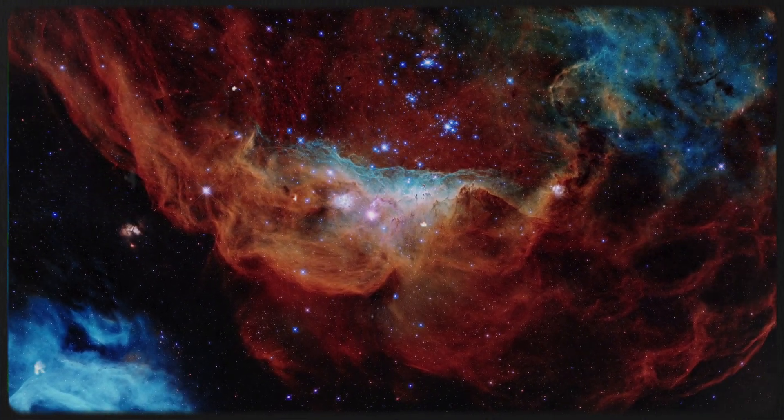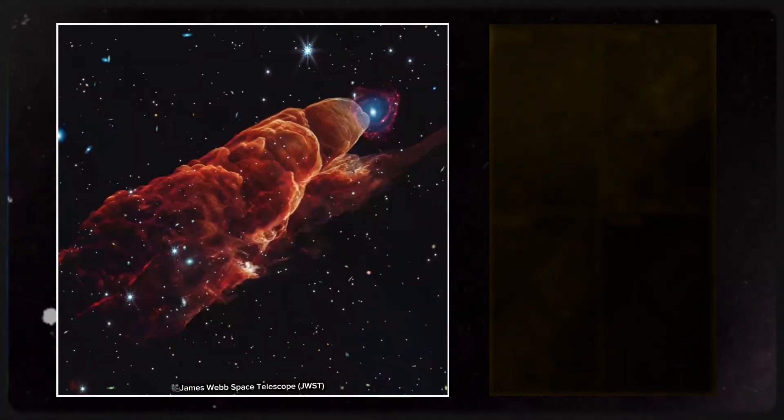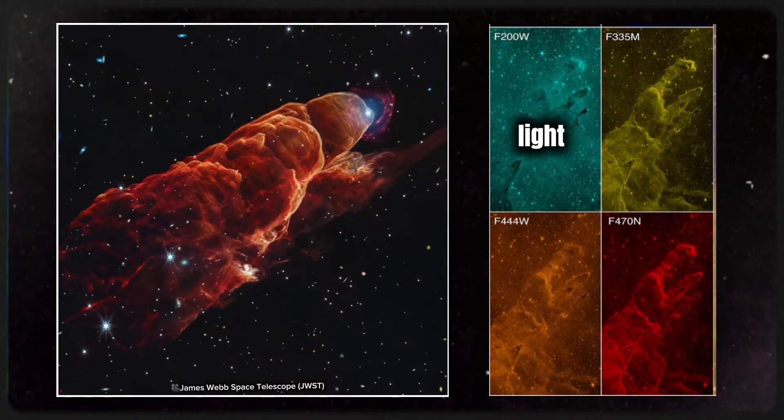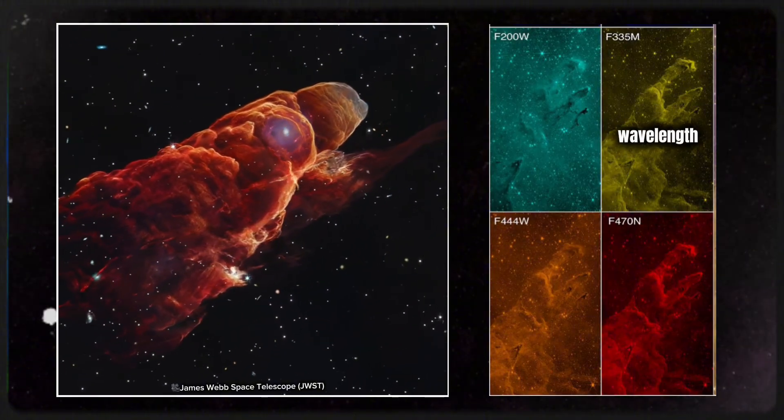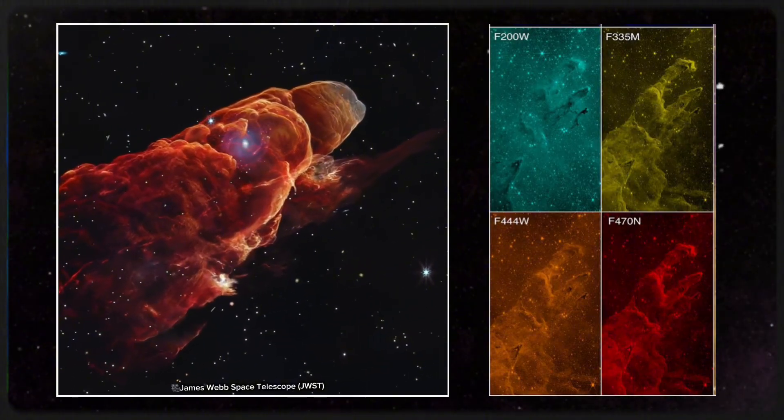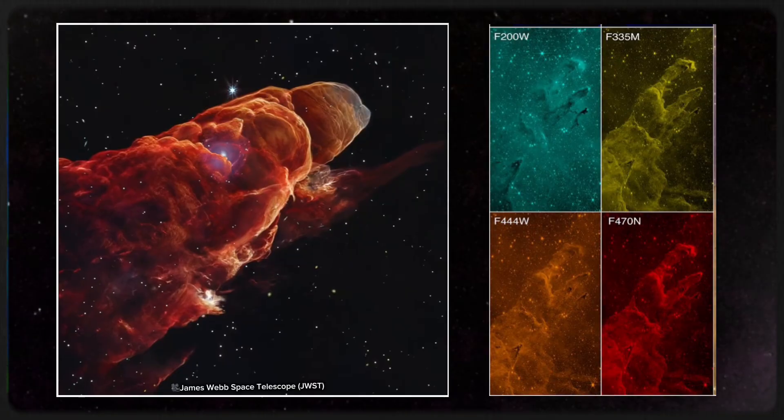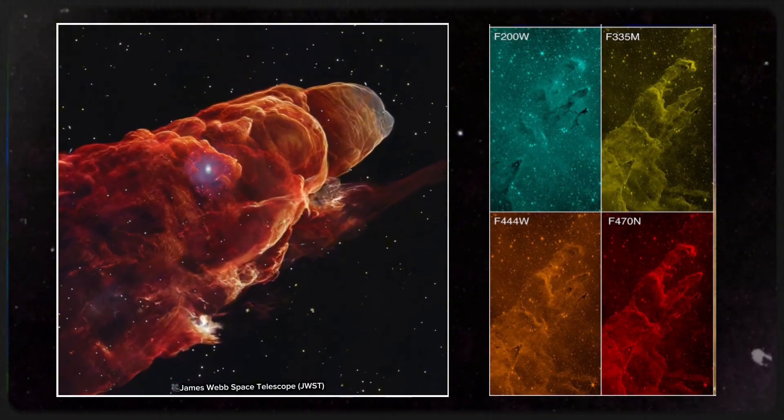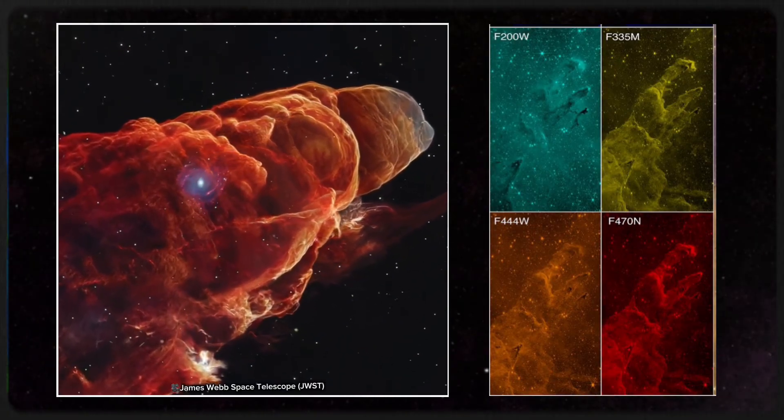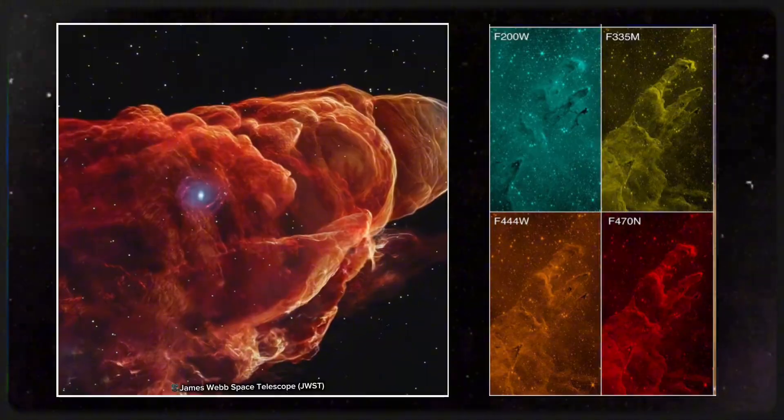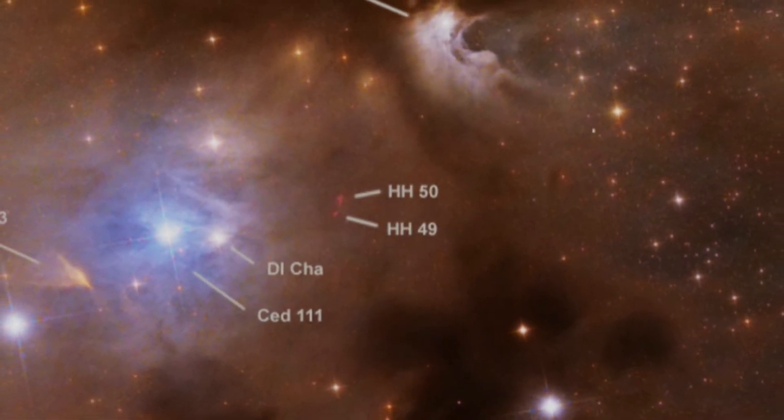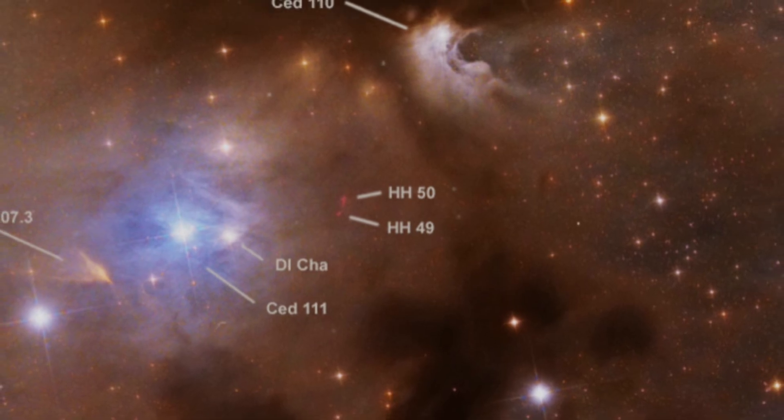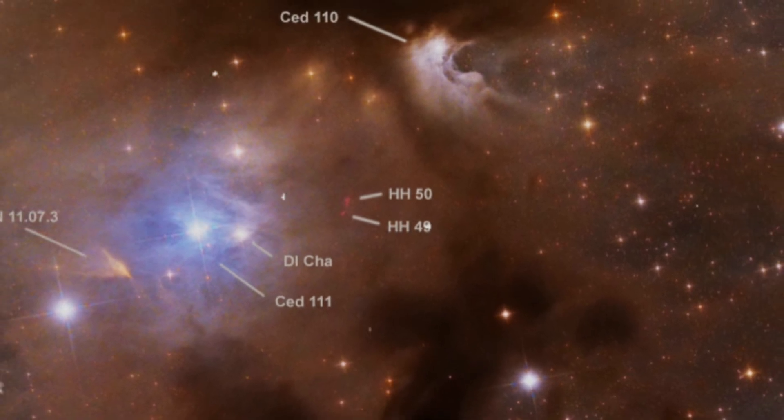Each color in this Webb image tells a story. The blue regions represent light captured through the F200W filter. Cyan indicates the F335M wavelength. Green comes from the F444W filter, orange from F470N, and red from F770W. Together, they create a richly detailed mosaic that helps astronomers decode the physical conditions within these outflows like temperature, density, and chemical composition.